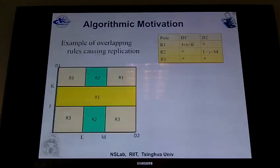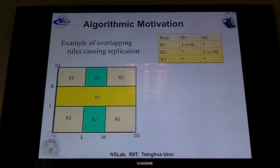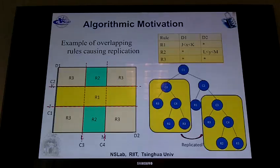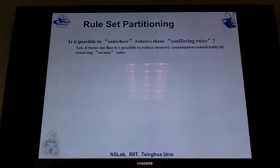Here's an example of what I mean by overlapping rules causing replication. There is a rule set with three rules and two dimensions — two header fields. If you convert this rule set into a geometrical view, you get this diagram here. If you build a decision tree based on this, the highlighted yellow part is the tree that got replicated because of the overlapping rules, and there's really no good way of removing it.